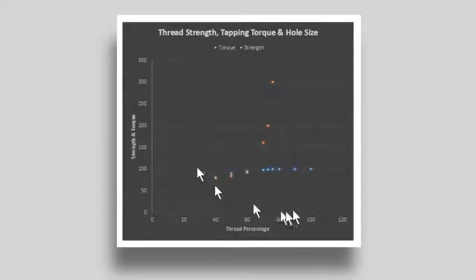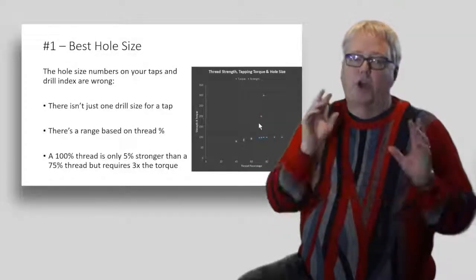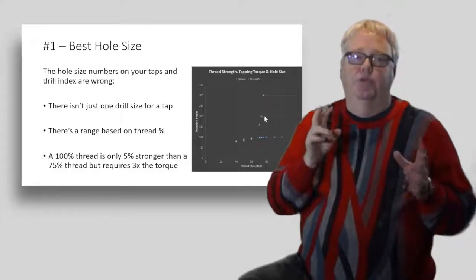The chart on this page shows that relationship. Those red orange dots are tapping torque. Look how fast they climb when thread percentage gets above 60 percent. Meanwhile, the blue dots are thread strength—that curve flattens out just when the torque starts climbing. Those recommended drill sizes on the tap packaging are almost always for a 75 percent thread.